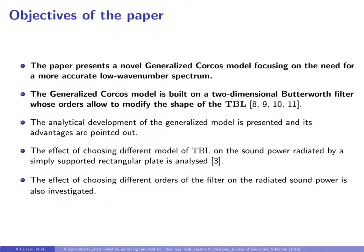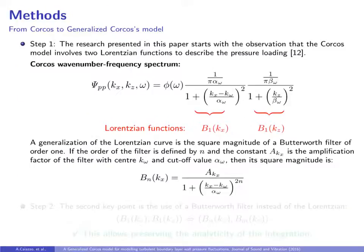The paper presents a novel generalized Corcos model built on a two-dimensional Butterworth filter, whose order allows to modify the shape of the TBL. In our work, the analytical development of the generalized model is presented and its advantages are pointed out. The effect of choosing different models of TBL on the sound power radiated by a simply supported rectangular plate is analyzed, and finally, the influence of the different orders of the filter on the radiating sound power is investigated.